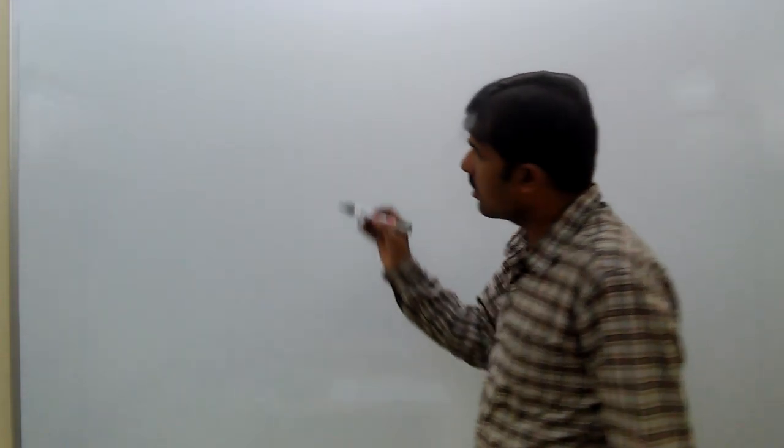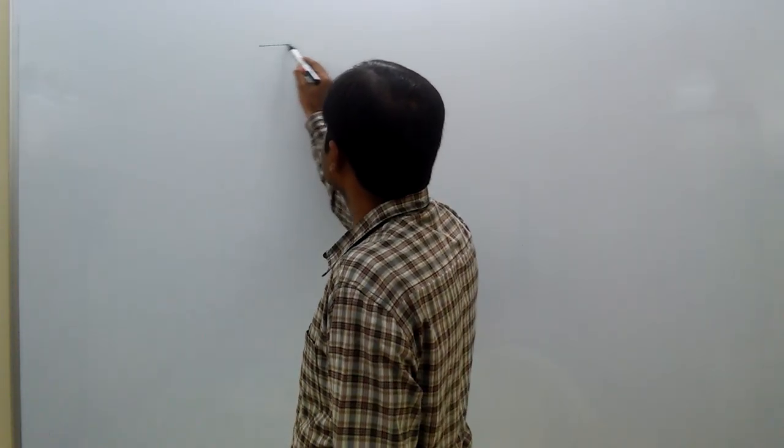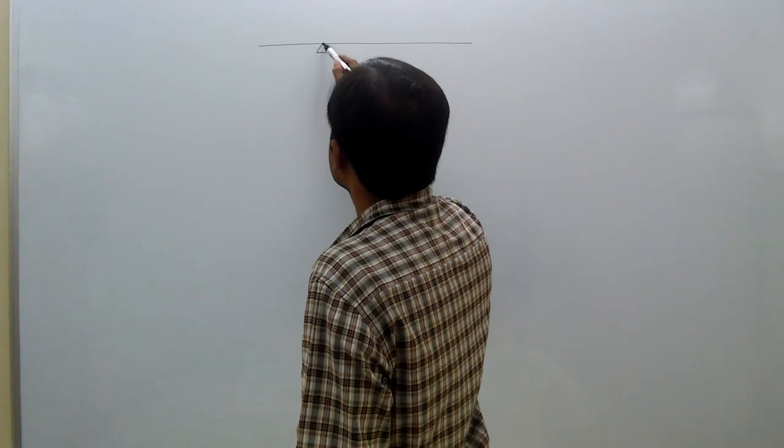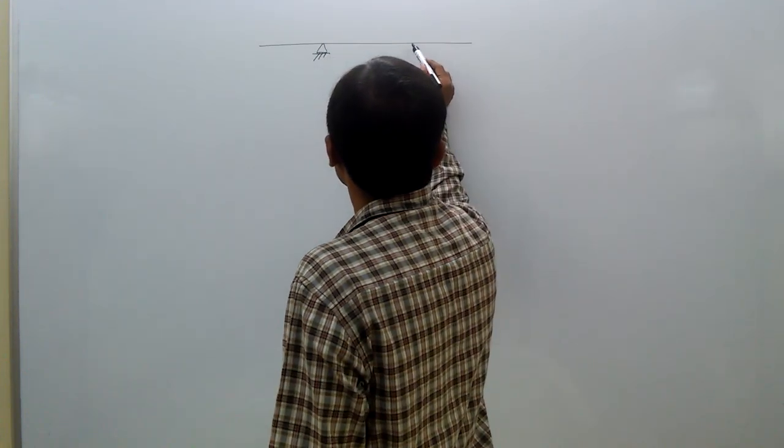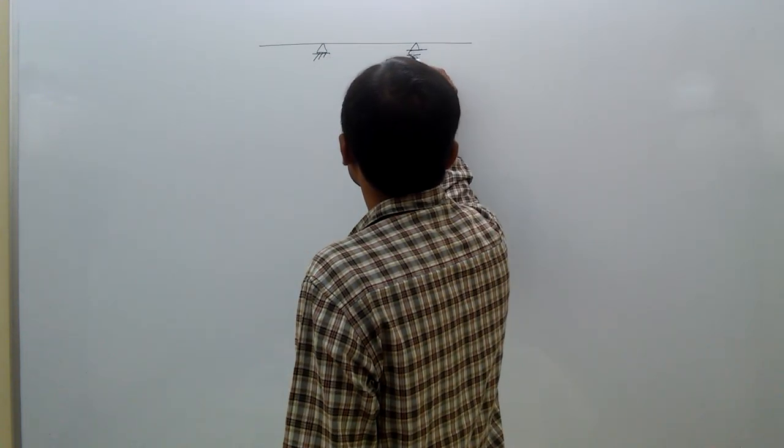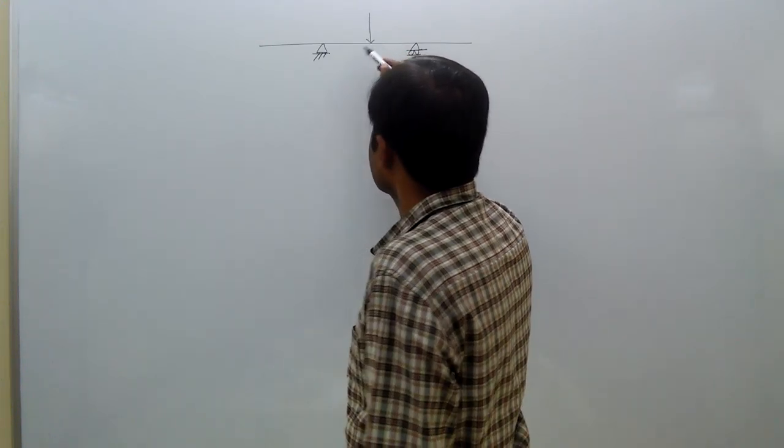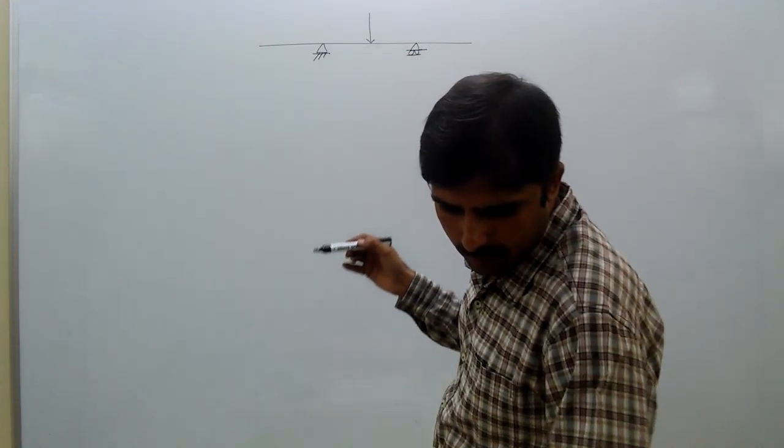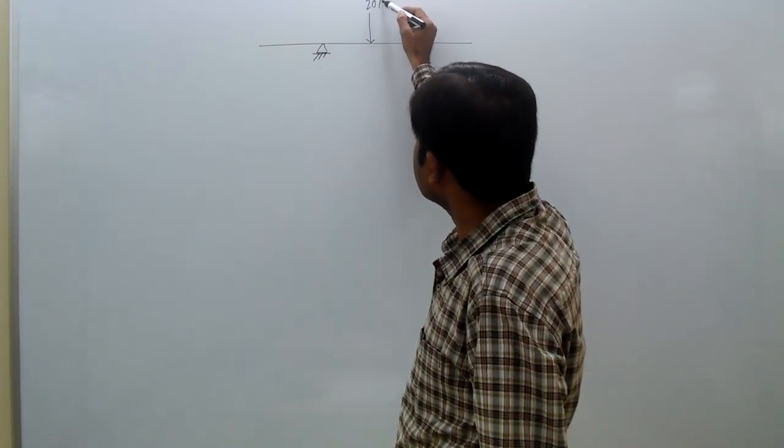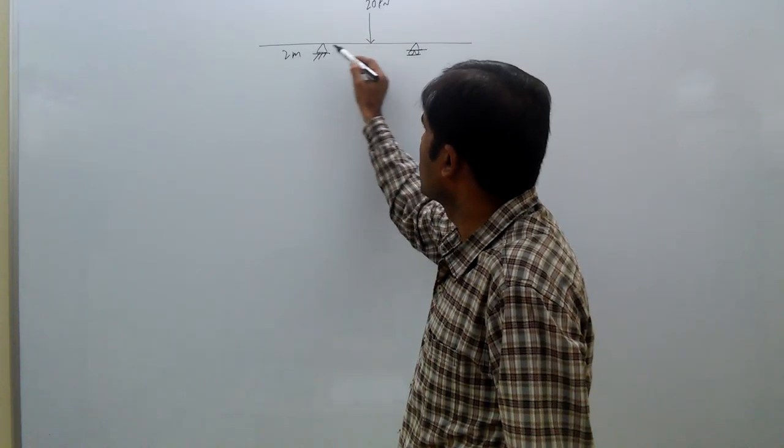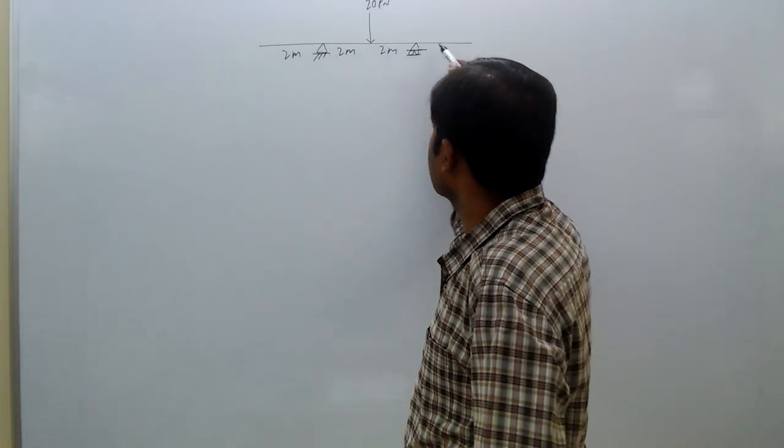An overhang beam of span 8 meters, carrying central point load of 20 kWh, with segments of 2m, 2m, 2m, 2m.